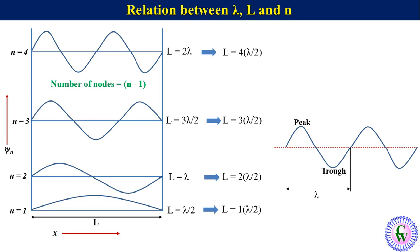Here we can see that the coefficient of lambda over 2 in each case is the quantum number of that level. So we can generalize that L equals n lambda over 2, or lambda equals 2L over n.